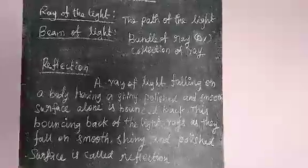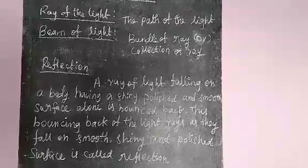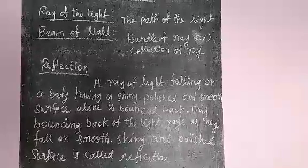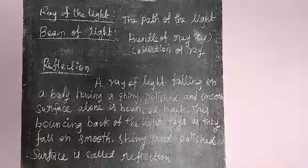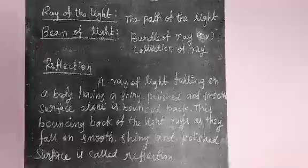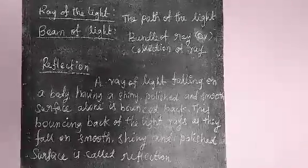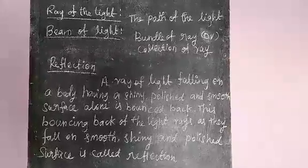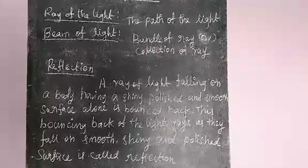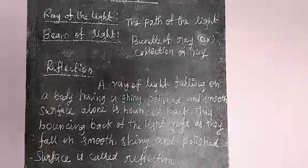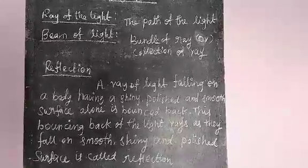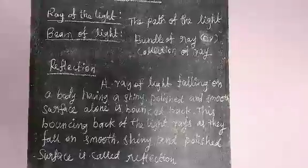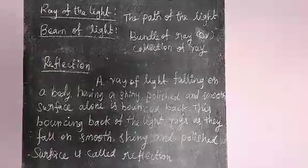We can see a bright spot on the wall due to reflection of light by the mirror, because the mirror is a highly polished, shiny, smooth surface. Suppose the mirror is not highly polished — rough — then we cannot see a light spot on the wall. So, light bouncing back after falling on a shiny, smooth, polished surface is called reflection of light.